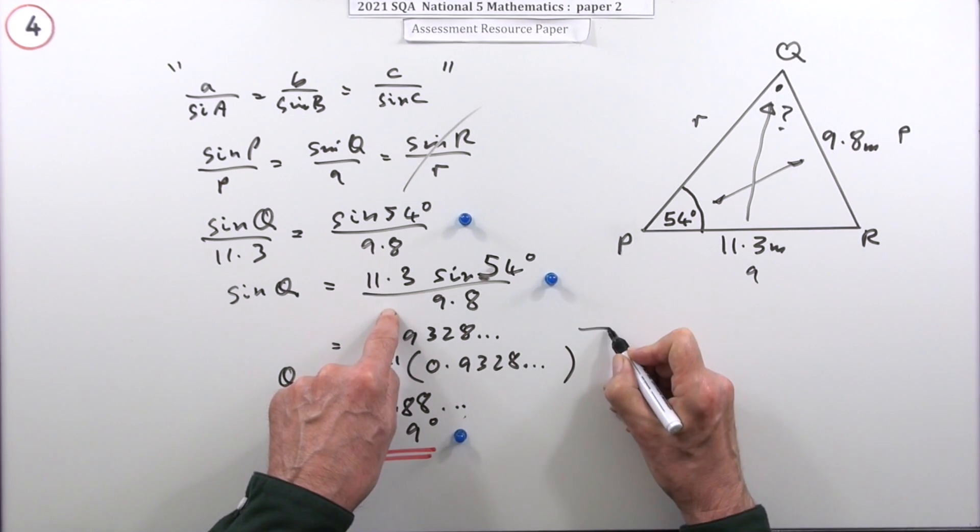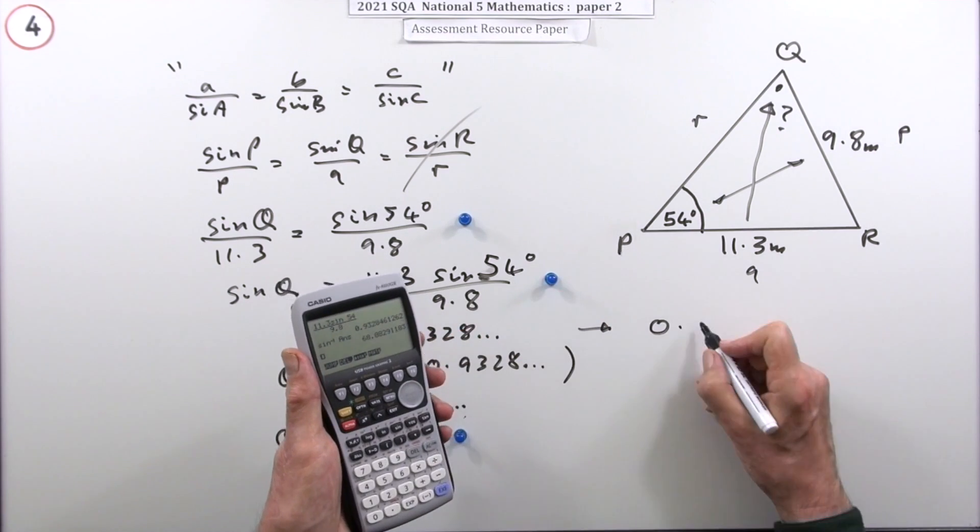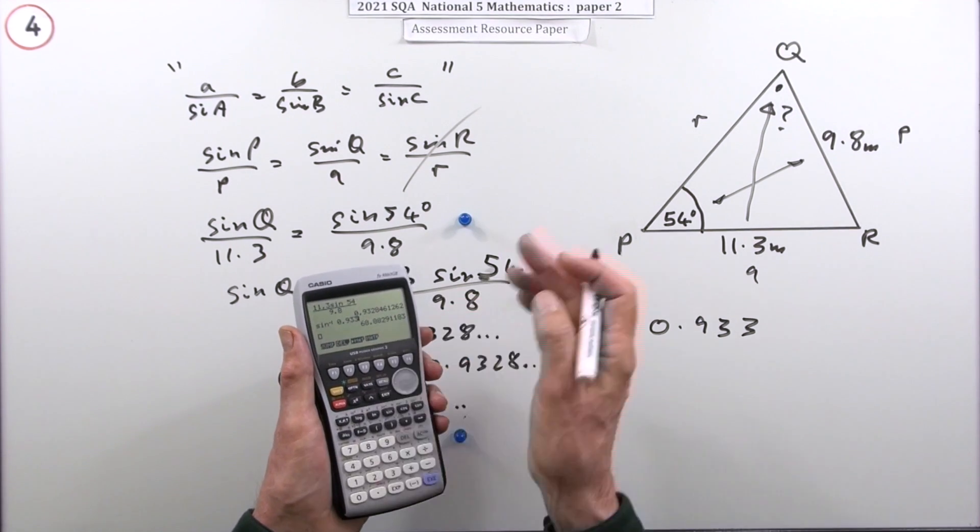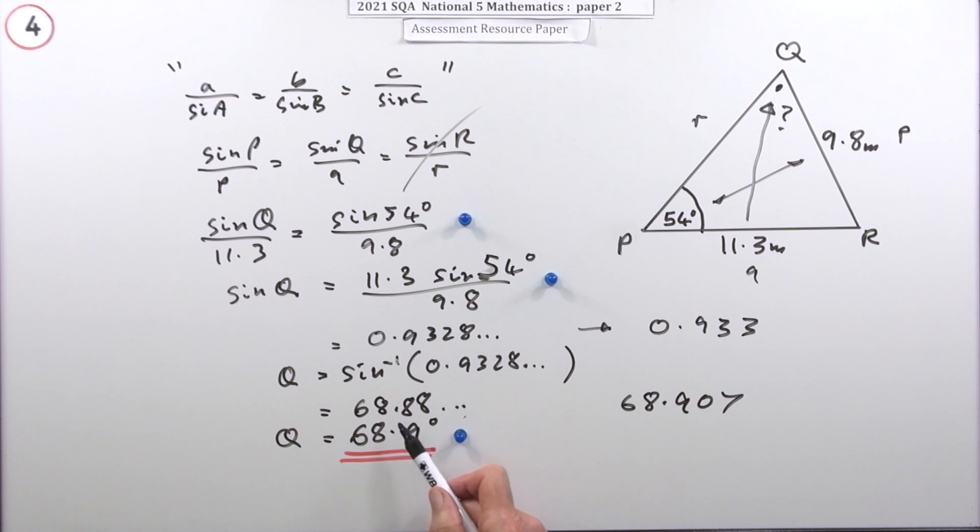Of course, the alternative would have been at this stage to say, I'll just round that off. You see that in your calculator, 9.3 and so on. So I'll just put in 9.3, round it off, 9.33. So at this stage, instead of writing that in the bracket, I just put in 0.933 and do inverse sine of 9.33. If you do it that way, you get 68.907. So it's not really the same, but it still rounds off the same. 68.9, if you take it to the first three figures.